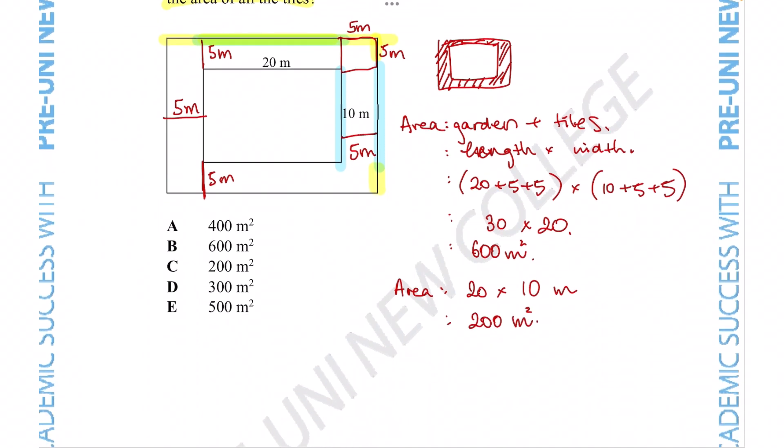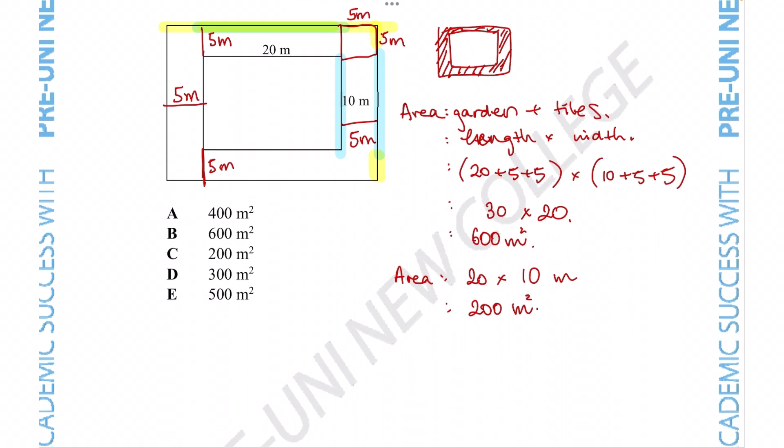So if we want the area of just the tiles, that's going to be the area of the garden plus the tiles minus the area of the garden. So we know what those values are: the garden and tiles area is equal to 600 meters squared, and the area of just the garden we just figured out to be 200 meters squared. So we can tell that the tiles consist of 400 meters squared, which means that our final answer is option A.